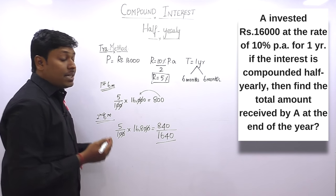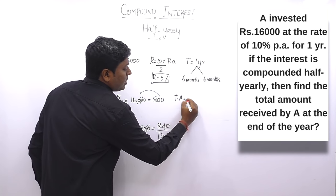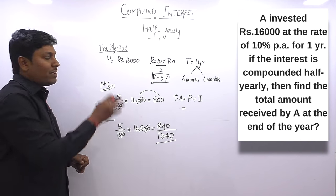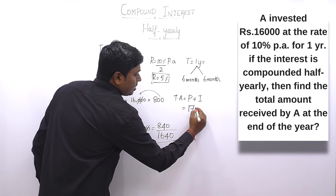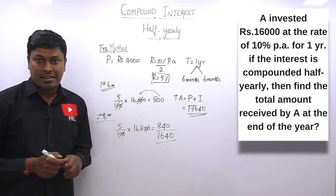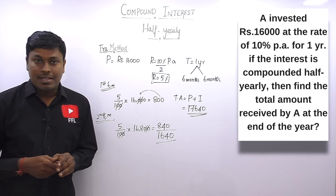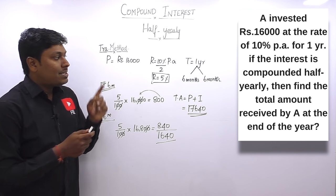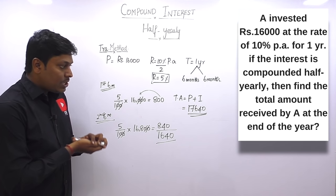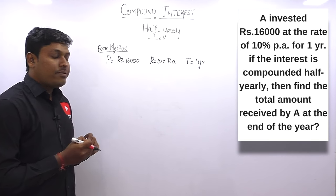The answer by traditional method is 17,640. Now let me solve this by the formula method. The formula for compound half-yearly is A = P × (1 + r/2 ÷ 100)^(2n). Substitute: P = 16,000, r/2 = 10/2 = 5, so 1 + 5/100 = 105/100. Power = 2 × 1 = 2. So A = 16,000 × (105/100)².